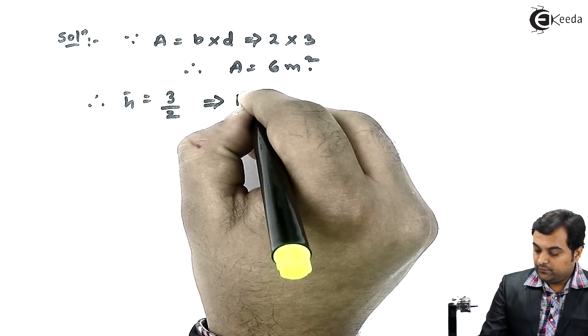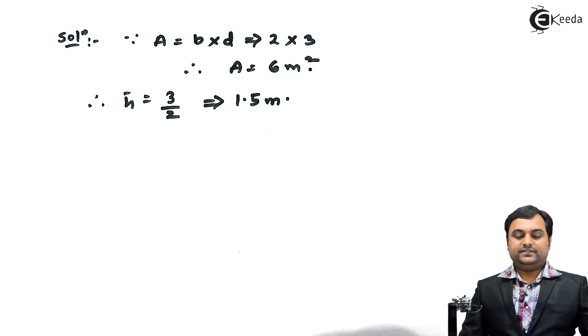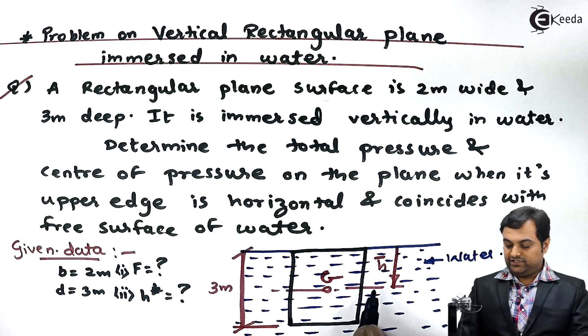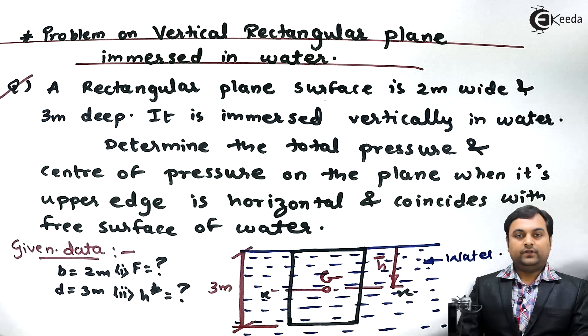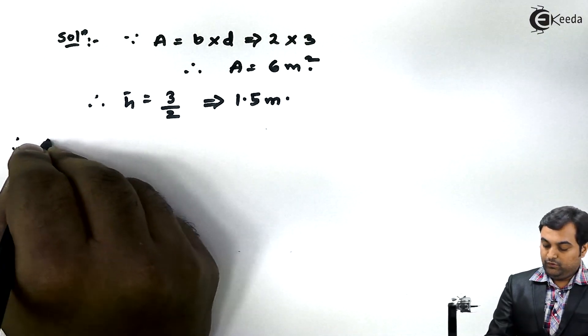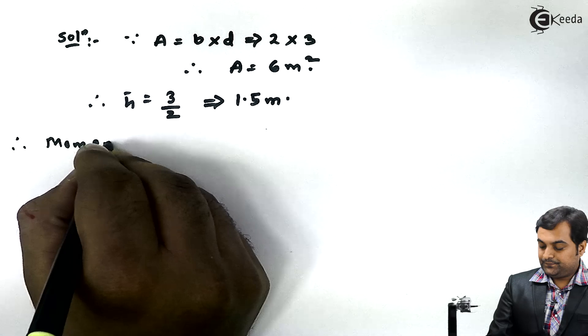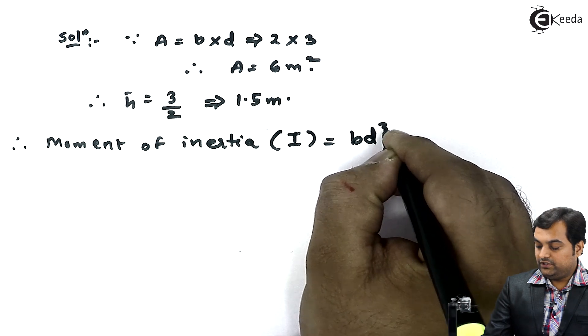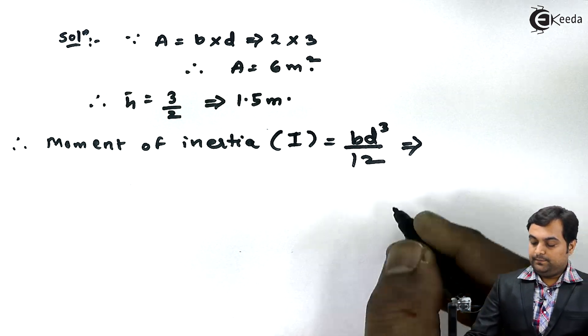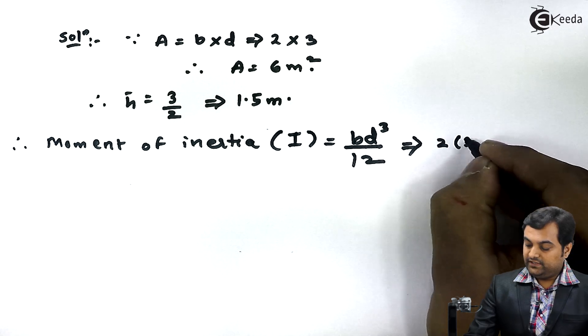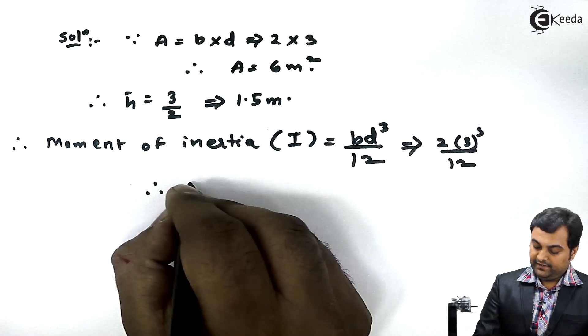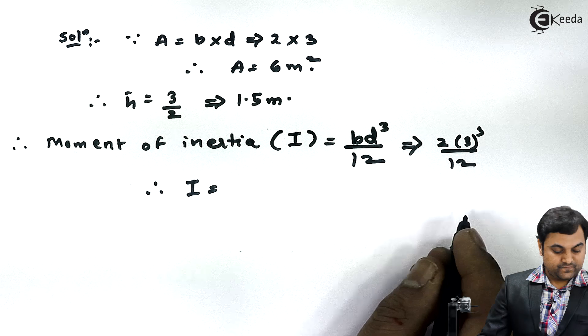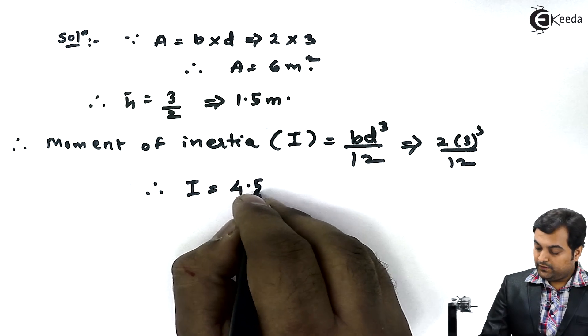Next, since we know the centroid, I'll calculate moment of inertia about this horizontal axis. So therefore moment of inertia I is equal to, about horizontal, B D cube by 12. B is 2, D is 3, so my answer of I comes out to be 4.5 meter raise to 4.